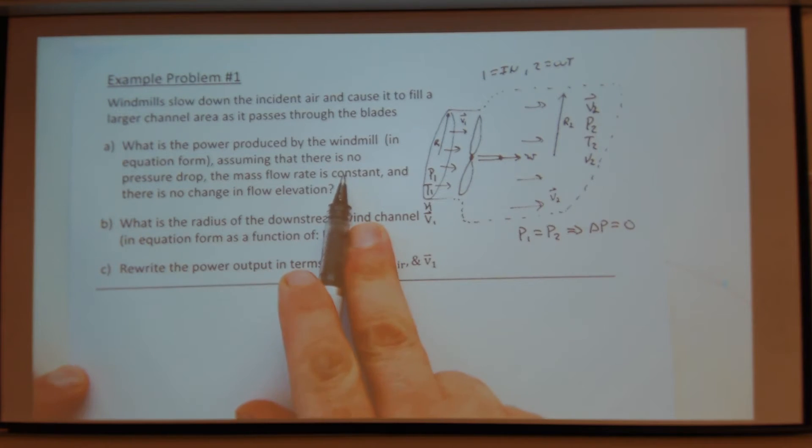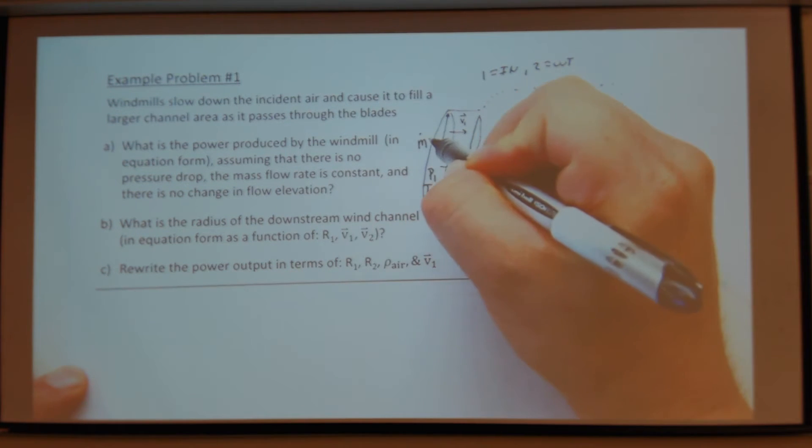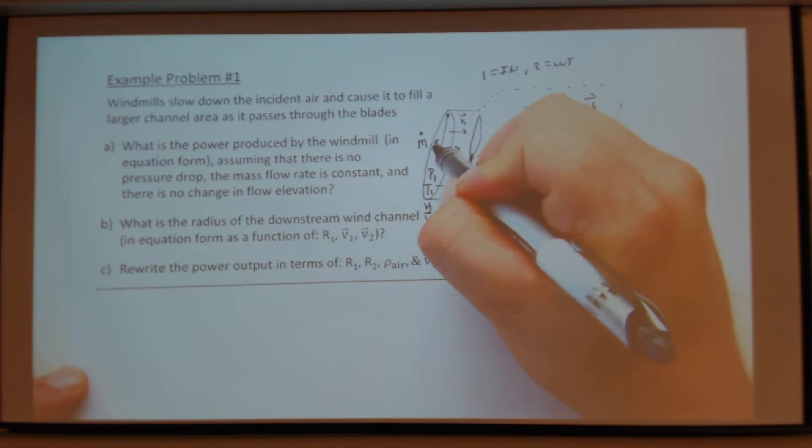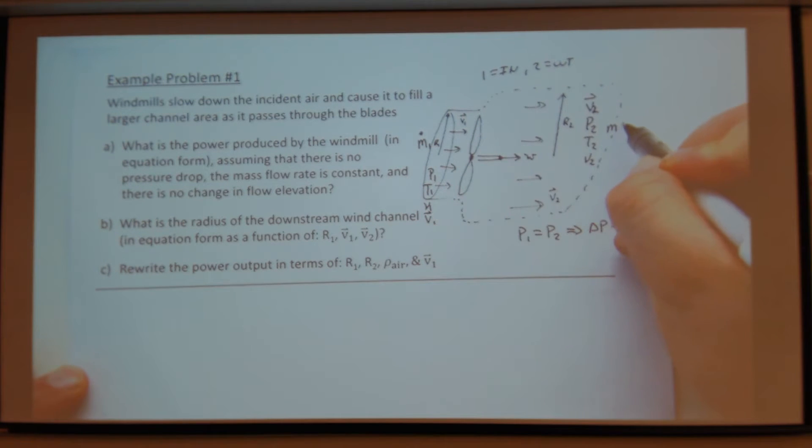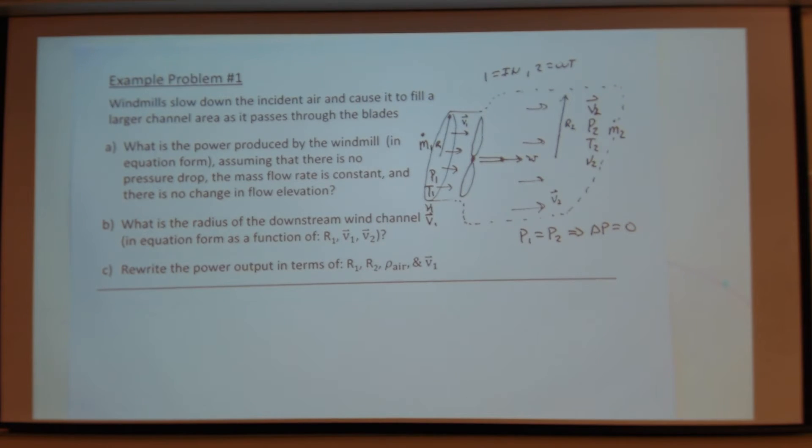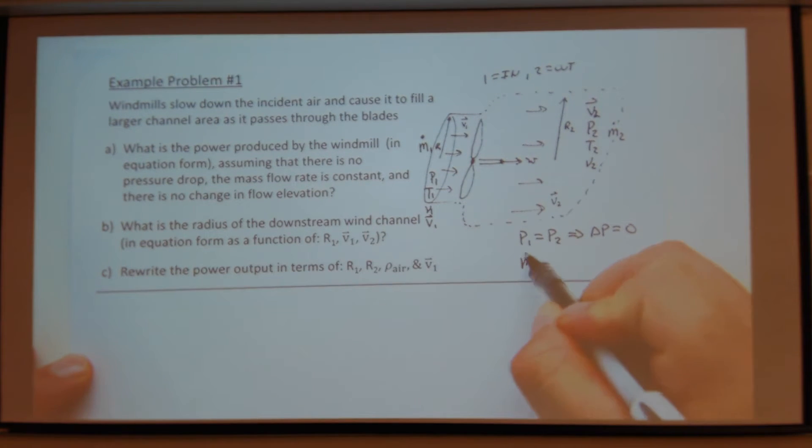Mass flow rate is constant. So I have a mass flow rate of air coming in and I have a mass flow rate of air after the blades. Mass flow rate is constant. M1 dot equals M2 dot equals M dot, which is a constant.